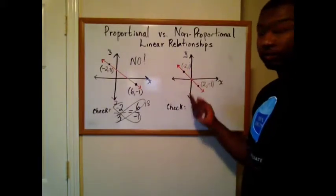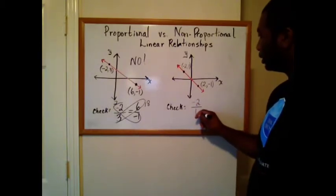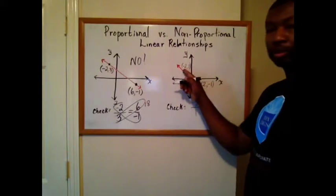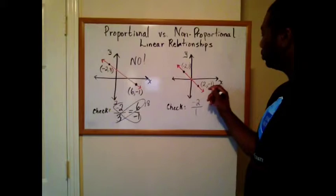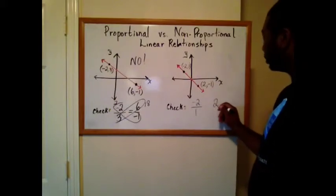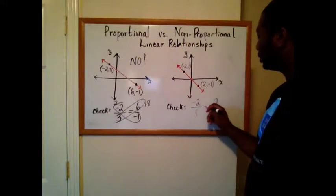Take the point, write it as a fraction. Negative two over one. First number on top, second number on bottom. Over here, two negative ones. Two on the top. One on the bottom. Negative one.